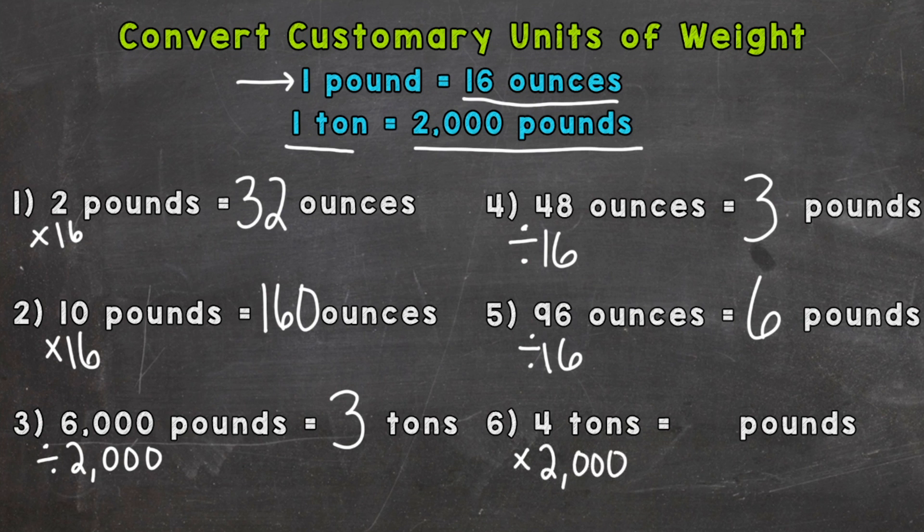So we can do 4 times 2,000 which equals 8,000. So 4 tons equals 8,000 pounds.